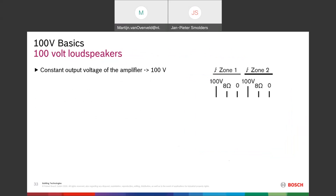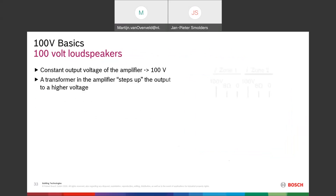Looking at the 100V loudspeaker system: a 100V amplifier has a constant output voltage of 100 volts. Inside the amplifier a step-up transformer is added — the same 120W amplifier at 31V output now has the voltage transformed up to 100V. To use the same low-impedance loudspeakers, a step-down transformer is also needed inside each loudspeaker.